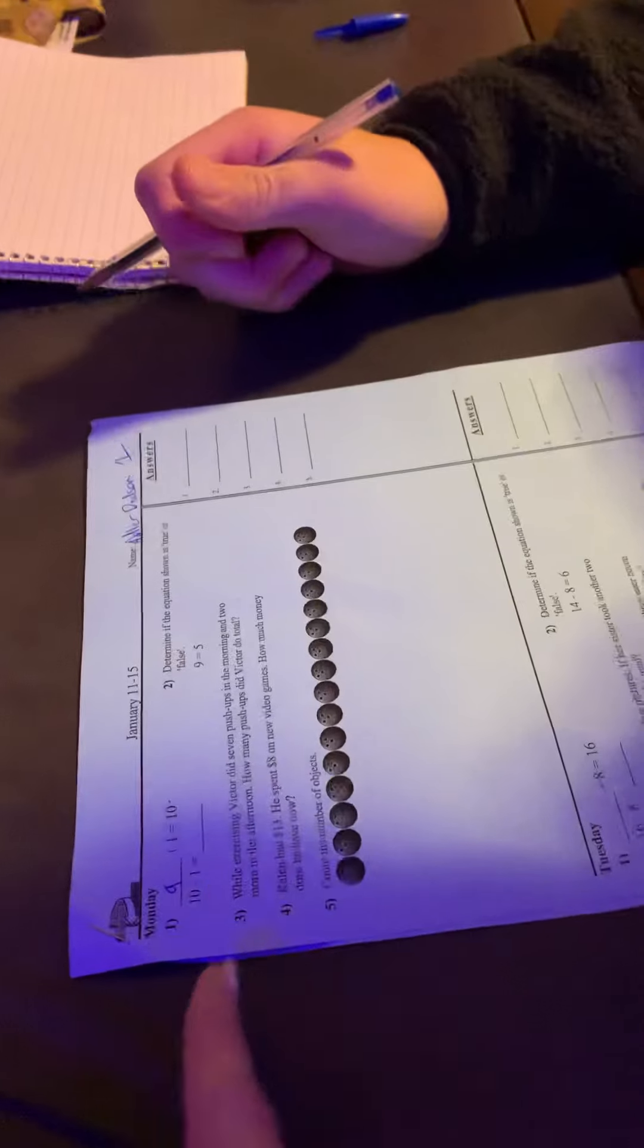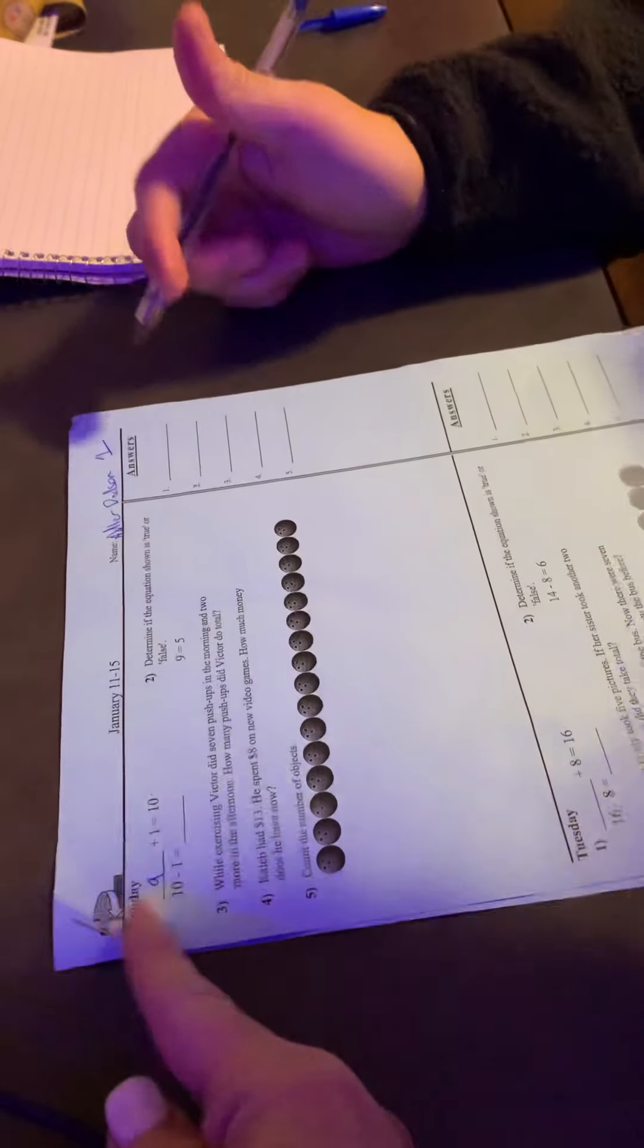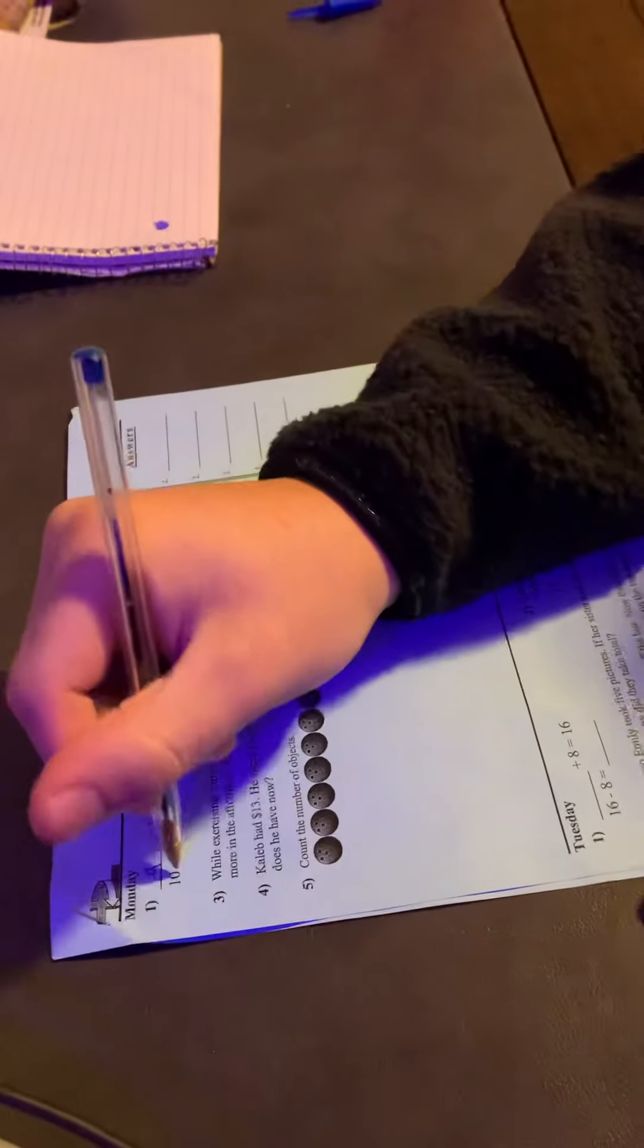Now does ten minus one equal nine as well? Yes. So those equations are equal, right? Yeah, ten minus one equals nine as well. And then we're going to put it on that line so it's easy for our teacher to grade. Booyah. Then we put the nine.